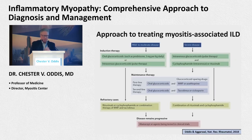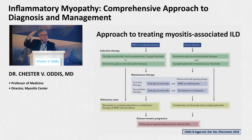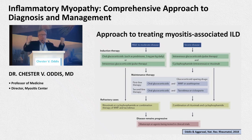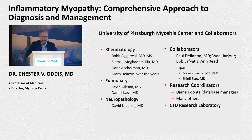ILD kills my patients with myositis and we have to jump all over it. It's different from systemic sclerosis, where patients slowly deteriorate. In myositis, we not only deal with that slow progression but also the acute rapid exacerbation of rapidly progressive ILD associated with certain autoantibodies.